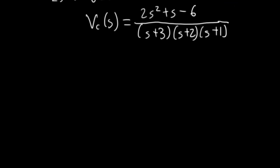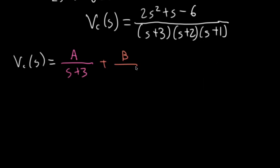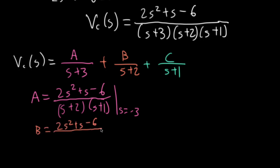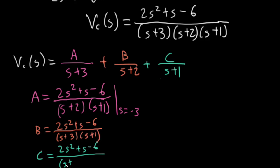Now we see why the professors set up the numbers that way — it works out nicely. To finish, I'll do the partial fraction expansion, writing it as A/(S+3) + B/(S+2) + C/(S+1). Using the residue cover-up method: A equals (2S²+S−6) over (S+2)(S+1) evaluated at S=−3; B covers up (S+2), evaluated at S=−2; and C covers up (S+1), evaluated at S=−1.